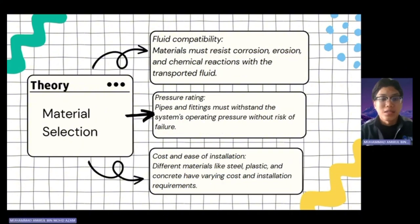Next is material selection. For material selection, we also have three points. Firstly, fluid compatibility: materials must resist corrosion, erosion, and chemical reactions with the transferred fluid. Second is pressure rating: pipes and fittings must withstand the system operation pressure without risk of failure. Thirdly, cost and ease of installation: different materials like steel, plastic, and concrete have varying costs and installation requirements.